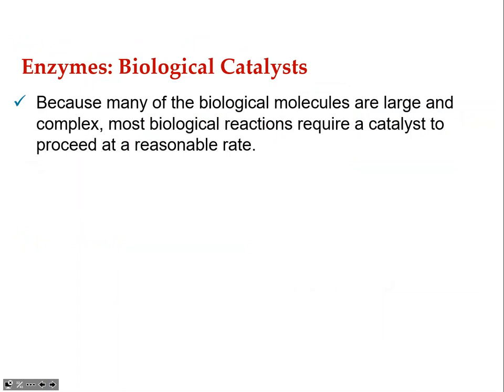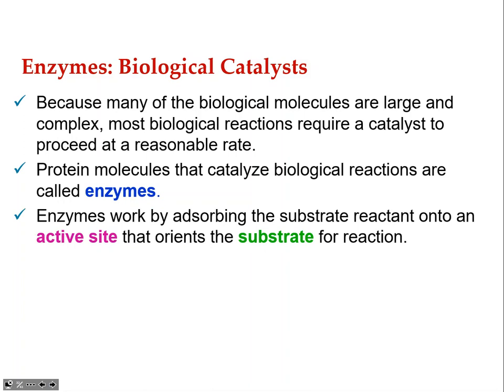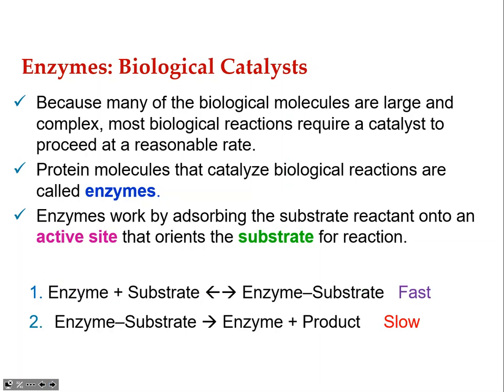Biological catalysts called enzymes are large molecules that allow reactions to proceed at a reasonable rate. They're very helpful because reactions can take place at much lower temperatures — they don't need super-high kinetic energy for effective collisions. The lock-and-key mechanism: the substrate fits into the active site of the enzyme. It's a two-step mechanism — fast step: enzyme and substrate bind; slow step: bond breaking or bond forming occurs.